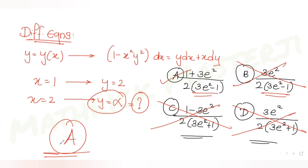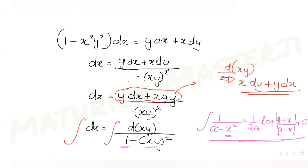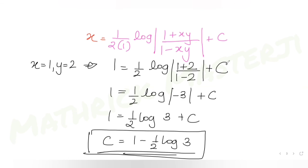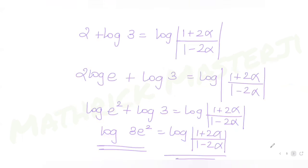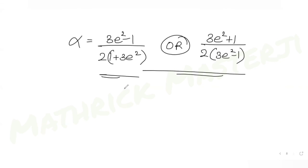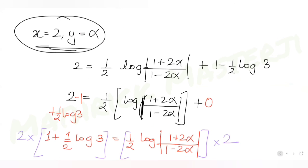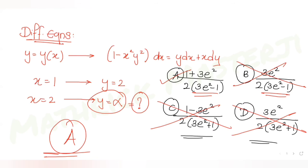I hope you have understood how to solve this type of question. We were given a differential equation, solved it, and found the solution. Then we found the constant C using the condition x = 1, y = 2. Substituting the second condition x = 2, y = α gave us the value of α, which matches option A.